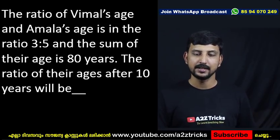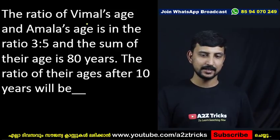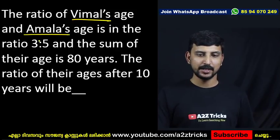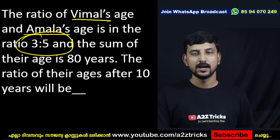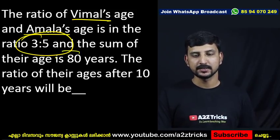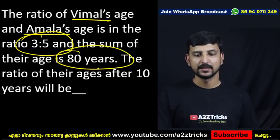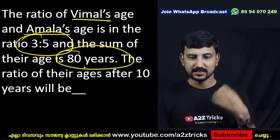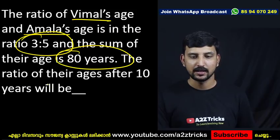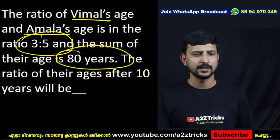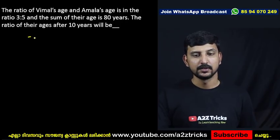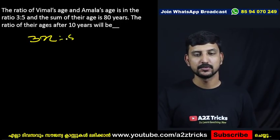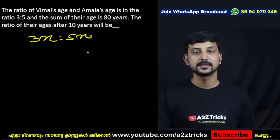After 10 years. The ratio is 3 to 5 and the sum of their ages is 80 years. Very simple and powerful: let 3x and 5x be their ages. 3x is to 5x.